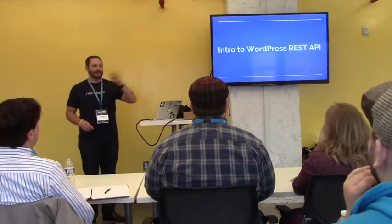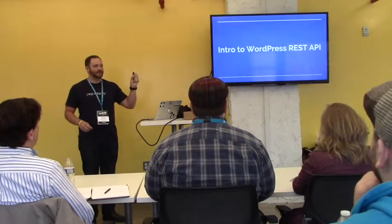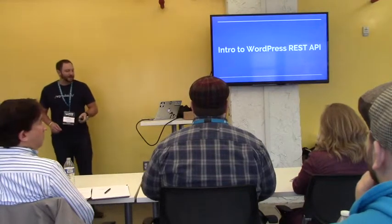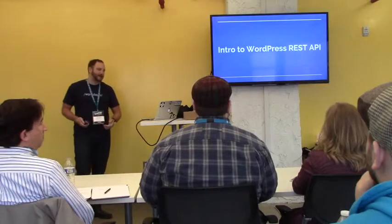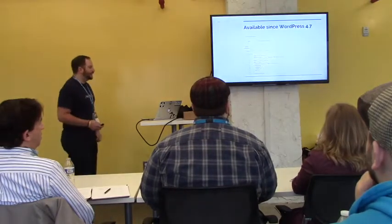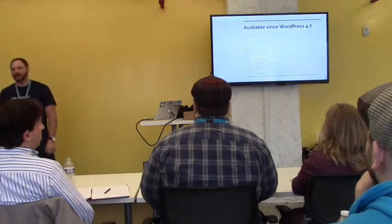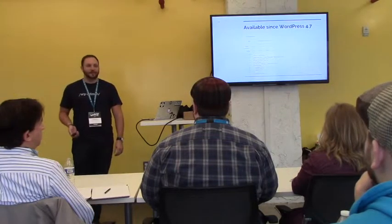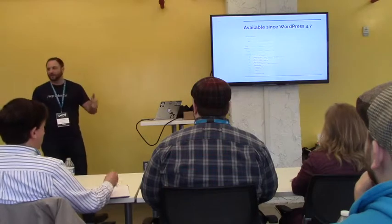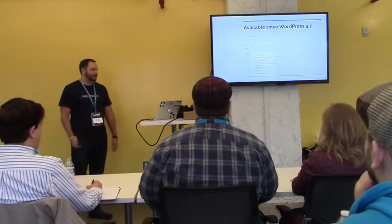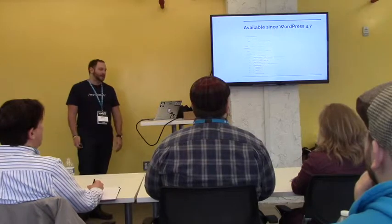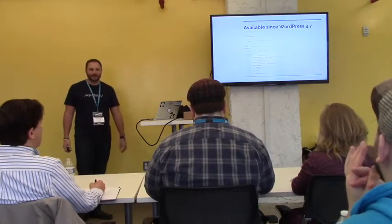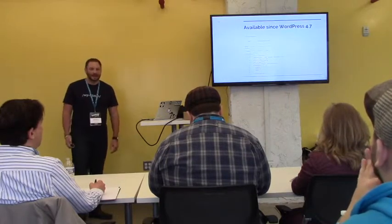Any questions on the foundational REST stuff? You guys good so far? Okay, cool. So let's jump into the WordPress REST API and how this all comes together. Since WordPress 4.7, the WordPress REST API has been available. If you pull up your browser, go to your WordPress site, and type in /wp-json, you'll be able to see basically the core calls within your WordPress API — so inherently, it's there for you to use.